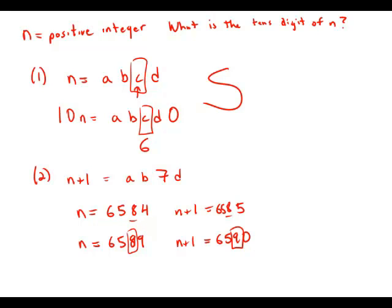So we don't know whether or not adding one will change the tens digit and whether the tens digit of seven actually is the tens digit of n or whether n had a tens digit of six and then we carried the one to make seven. So this statement by itself is insufficient. There's ambiguity that we cannot resolve.